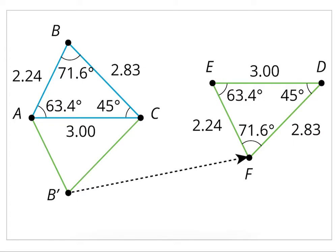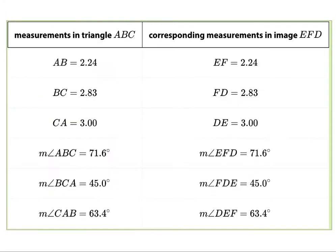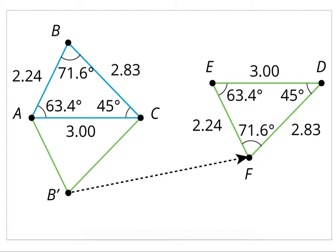Summary for lesson 7: no bending or stretching. In this case, they're showing you that this image is reflected to this green image and then translated over here. After that reflection and translation, the angles all remain the same: 71.6°, 71.6°, 63.4°, 63.4°, 45° and 45°.